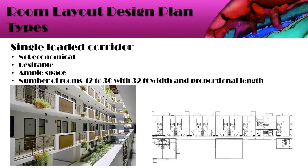Next is the single loaded corridor. This is not very economical in terms of space usage, but it is very desirable. Properties with a very nice view typically use a single loaded corridor, where each room can have a balcony overlooking the view. It gives ample space to every room, and the number of rooms that can fit is 12 to 30 depending on corridor length, with a minimum width of 32 feet.